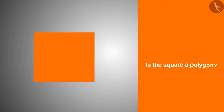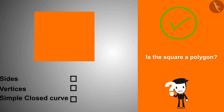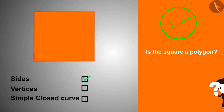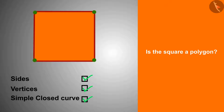Our first shape is a square. Is the square a polygon? Yes! The square has four sides and four vertices and is a simple closed curve, so it is a polygon.